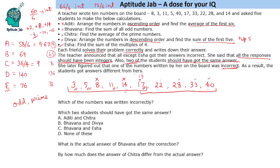If we decrease 17 by 10, it becomes 7, but C's sum would become 26, which doesn't give an integer average. If we decrease by 16, it becomes 1, which is not a prime number, so the average of primes won't be an integer. So we have eliminated all possibilities where a number is being decreased.